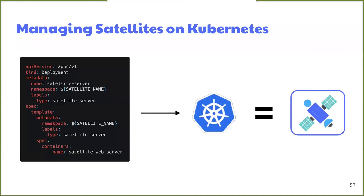Managing Satellite creation and deletion is simple with Kubernetes. We define a Satellite instance in a manifest file which describes its ports, names, specification details, and more. We supply this manifest file and some environment variables like name as arguments to the Kubernetes CLI, which makes a request to the Kubernetes API, which creates the given Satellite instance. Tearing down is just as easy — we just make another command to the Kubernetes CLI and supply the name of the Satellite instance to delete and the API takes care of the rest.